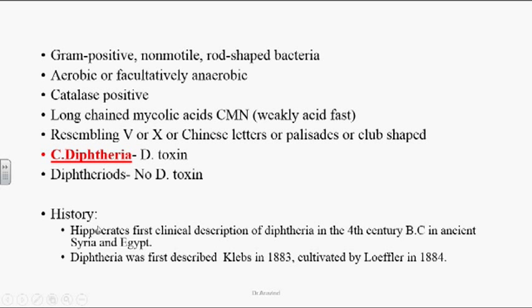History: Corynebacterium diphtheriae is a widely studied organism. Hippocrates provided the first clinical description of diphtheria in the 4th century BC, and there are references to these organisms in ancient Syria and Egypt. Diphtheria was first described by Klebs in 1883 and first cultivated by Loeffler in 1884.